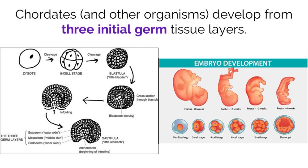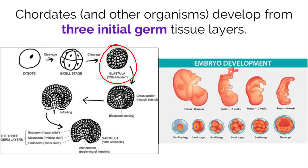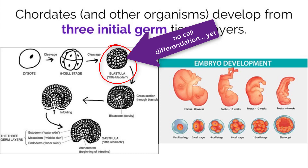Our one cell begins to duplicate itself through mitosis and split into other identical cells. This process keeps happening until we are now a small cluster of cells called a blastula. It's important to note that at this point, none of our cells are differentiated yet.